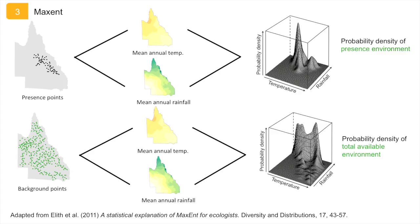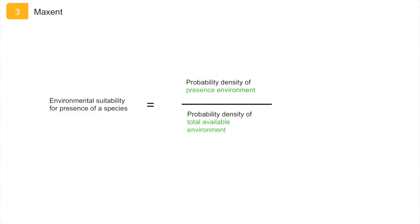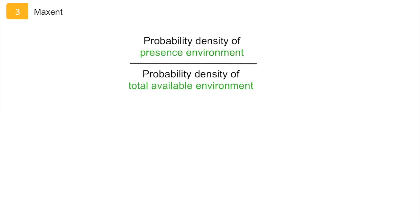Maxent then calculates the ratio between these two probability densities, which gives the relative environmental suitability for presence of a species for each point in the study area. Maxent chooses the distribution that maximizes the similarity between the environmental characteristics of the total environment and those of the locations where the species is known to be present. This is known as the raw output of Maxent.